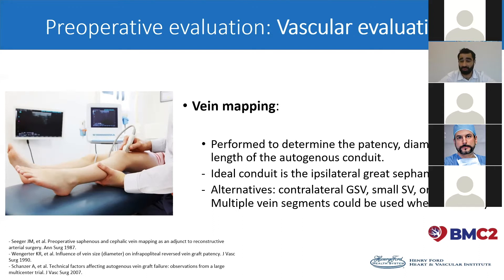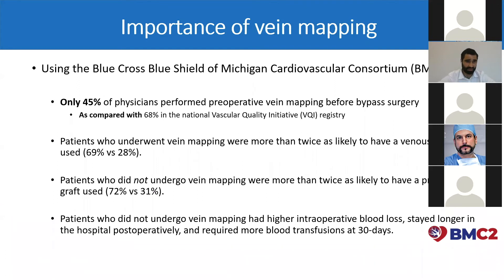The alternatives include the contralateral great saphenous vein, small saphenous vein, or arm veins, and sometimes multiple vein segments could be used. This is a nice segue to a recent study we performed using the Blue Cross Blue Shield of Michigan Cardiovascular Consortium, or BMC2, where we showed that only 45% of physicians performed preoperative vein mapping before bypass surgery, compared to 68% in the National Vascular Quality Initiative Registry. Patients who underwent vein mapping were more than twice as likely to have a venous conduit used, 69% versus 28%. Patients who did not undergo vein mapping were more than twice as likely to have a prosthetic graft used, 72% versus 31%. We also showed those patients had higher intraoperative blood loss, stayed longer in the hospital postoperatively, and required more blood transfusions at 30 days.